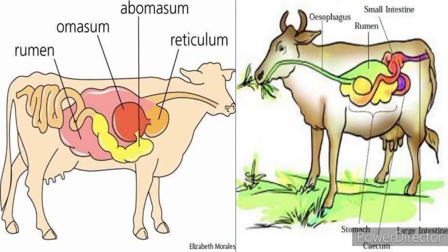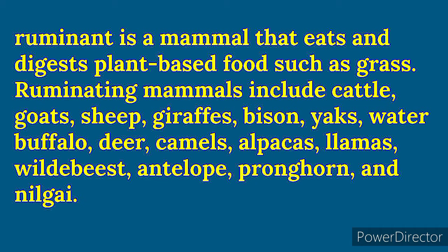All four compartments of the compound stomach are shown in the slide. A ruminant is a mammal that eats and digests plant-based food like grass. Ruminating mammals include cattle, goat, sheep, giraffes, bison, yaks, water buffalo, deer, camels, lemurs, wildebeest, antelope, pronghorn, and neelabai.